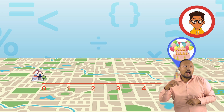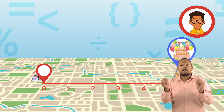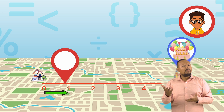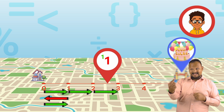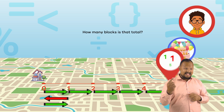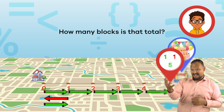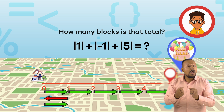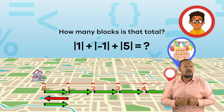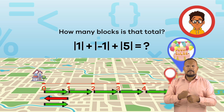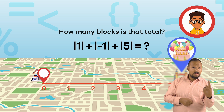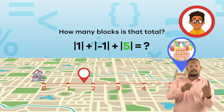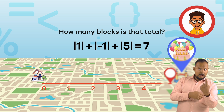How do you find out how far you walked? First, you walked forward 1 block, then you walked back 1 block, and then you walked the 5 blocks to your friend's house. How many blocks is that total? To find out, let's create an equation using absolute value. Do you see how we got there? You walked 1 block forward, 1 block back, and then 5 more forward, for a total of 7 blocks.